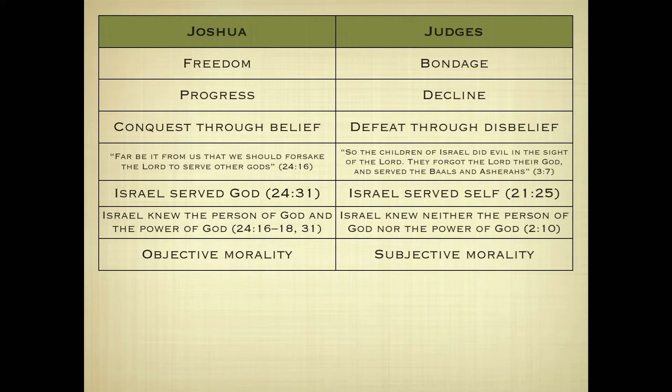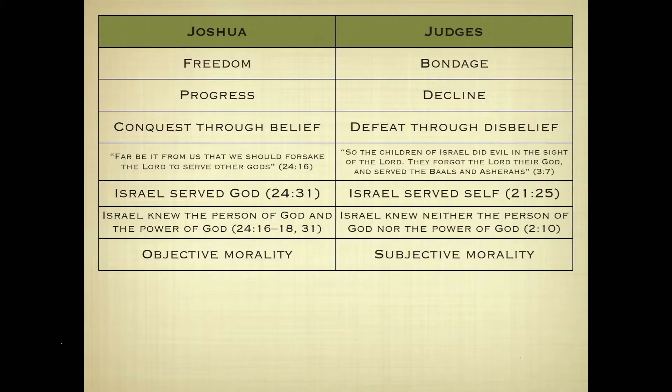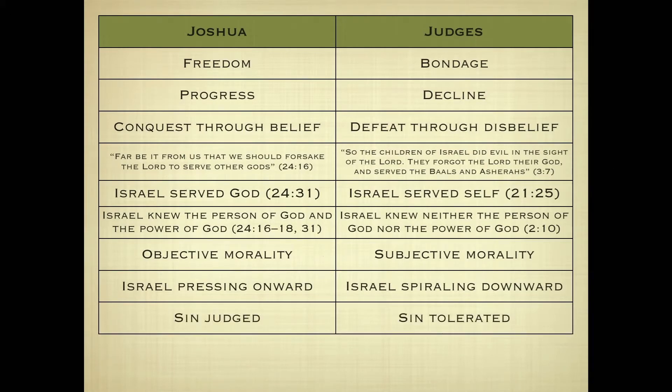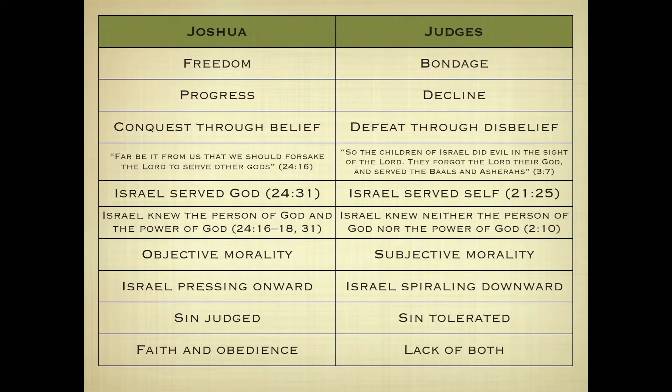We're in the same situation today in a real parallel way. Either the world will judge the Word of God or the Word of God will judge the world — one will win out in the end. We try to play by two sets of rules, living a bifurcated life, separating one part from another. We're inconsistent, trying to serve two masters. In Joshua, sin was judged; in Judges it became tolerated. We see faith and obedience in Joshua but a lack of both in Judges. These two books show how quickly we can go astray from the living God.